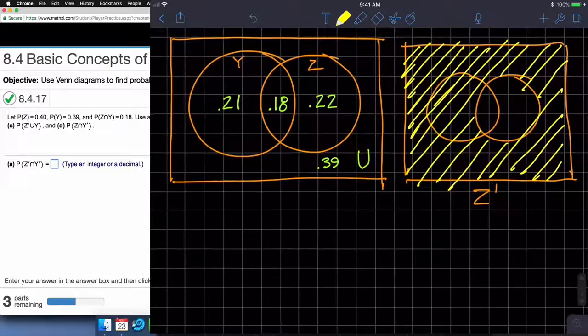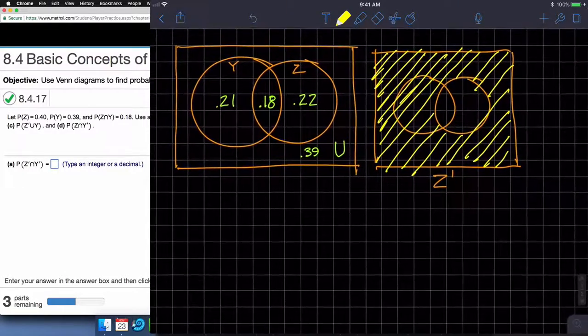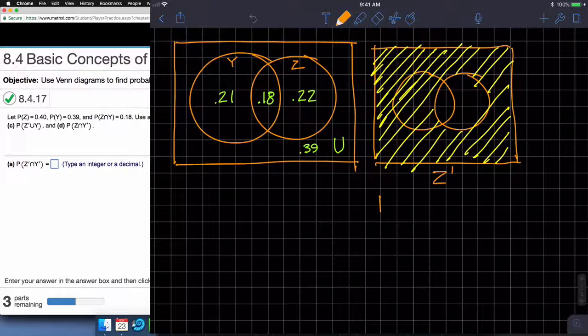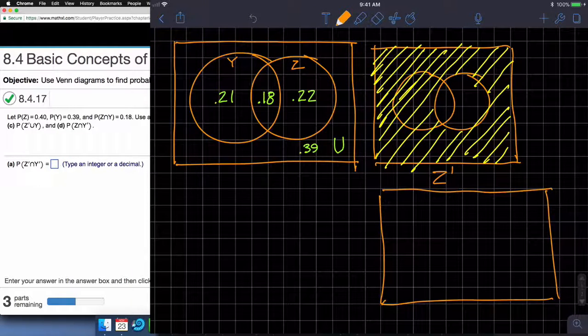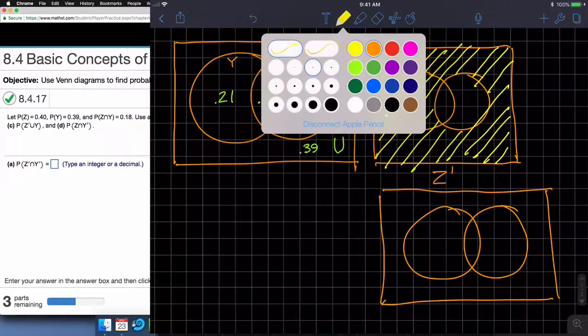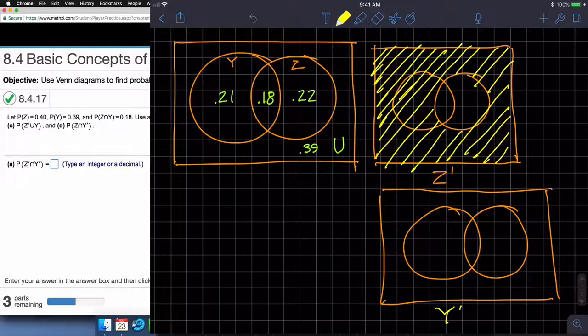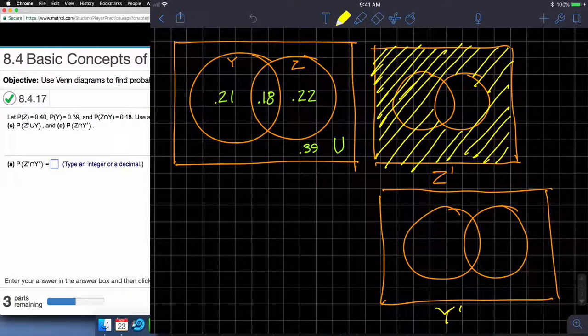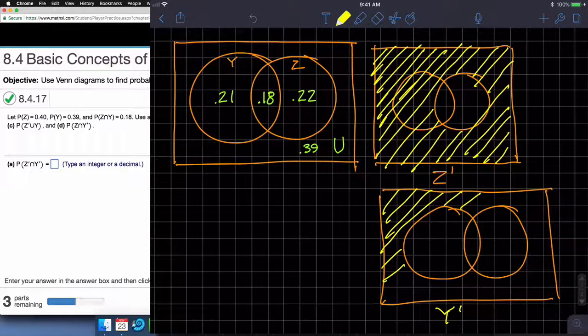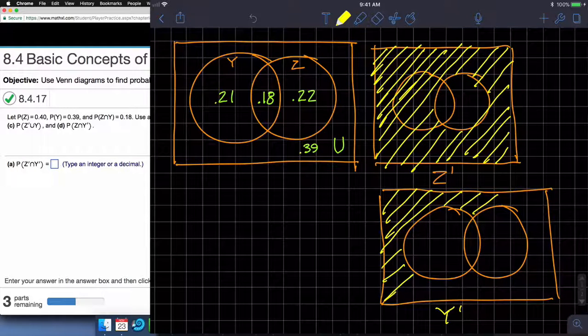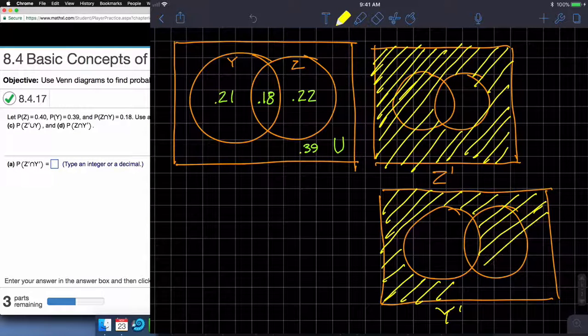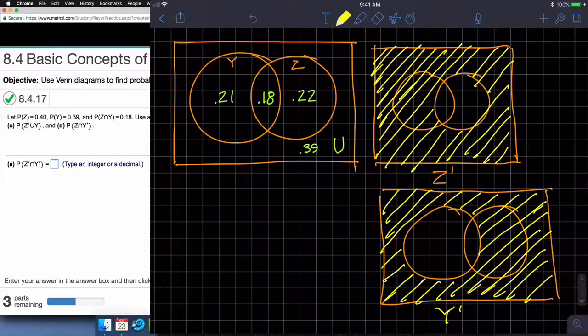Then let's look at Y complement. I want to make that a little bigger. So Y complement looks like this, everything not Y. Why? Because we like you. Yep, and I'm a weirdo. And so that's Y complement.